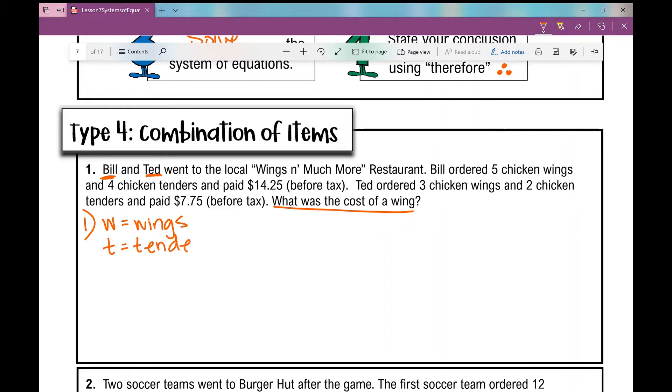And like I said, you can always label these X and Y, solve for Y, graph and find your point of intersection on your calculator. You can always do that. Just make sure it's so important to label your variables so that you know what you're talking about. Now because we're looking for the cost of a wing, I like to kind of put there I'm looking for the amount. I'm not looking for a number, not like how many wings or how many tenders. I'm looking for the cost of a wing.